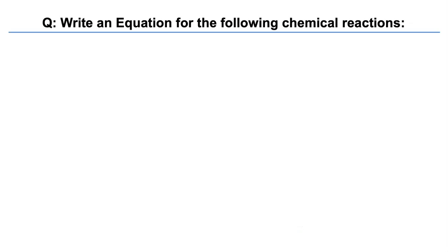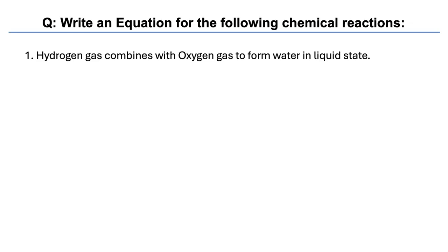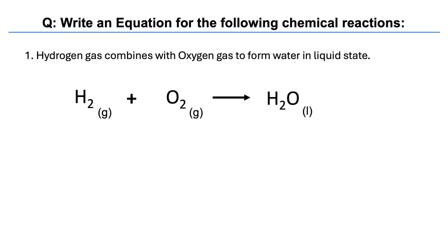Let's look at some word problems — how to write equations for them. Hydrogen gas combines with oxygen gas to form water in liquid state. So you're going to write H2(g) + O2(g) → H2O(l). We haven't gone into balancing equations yet, so you're just writing the unbalanced equation.